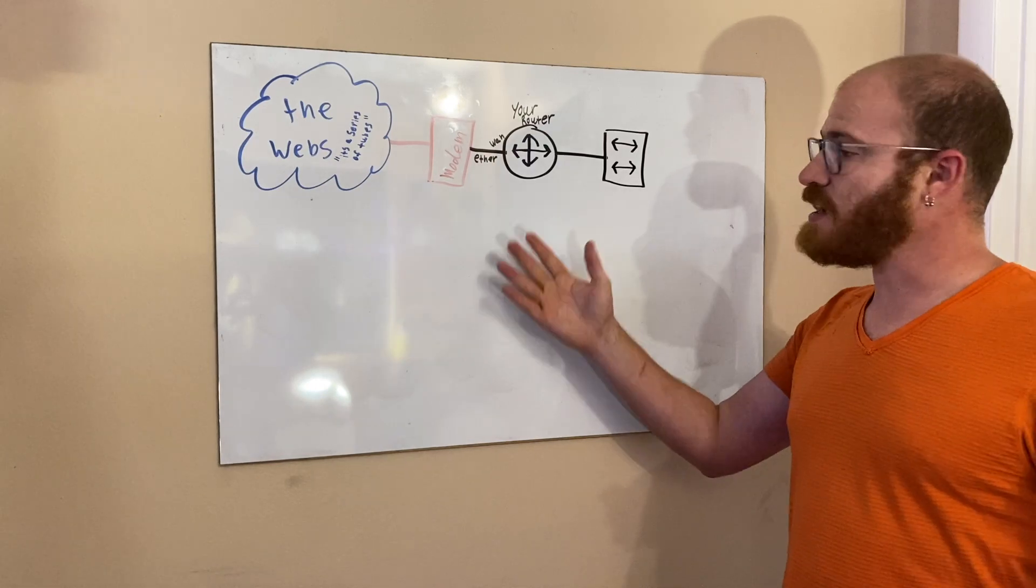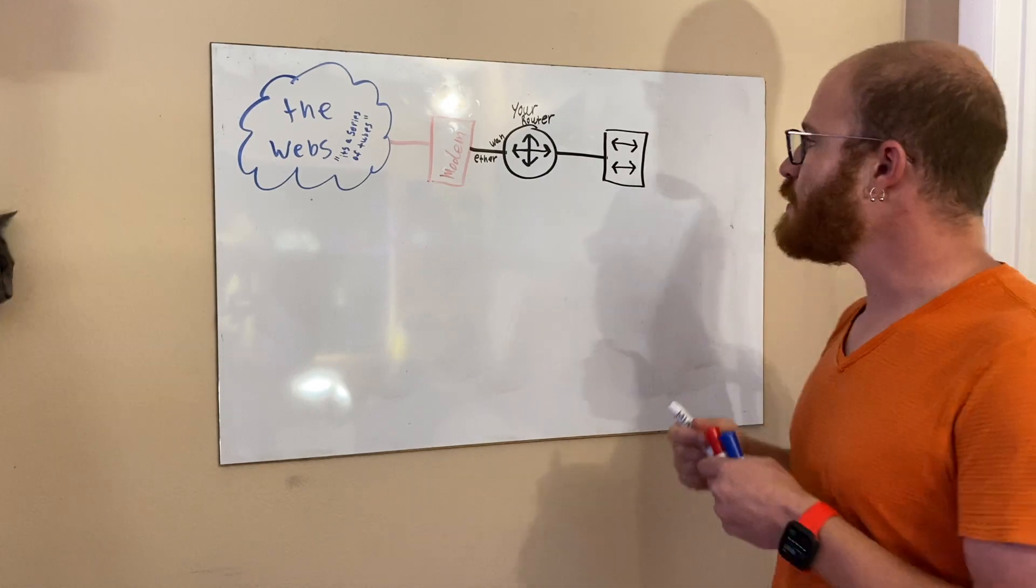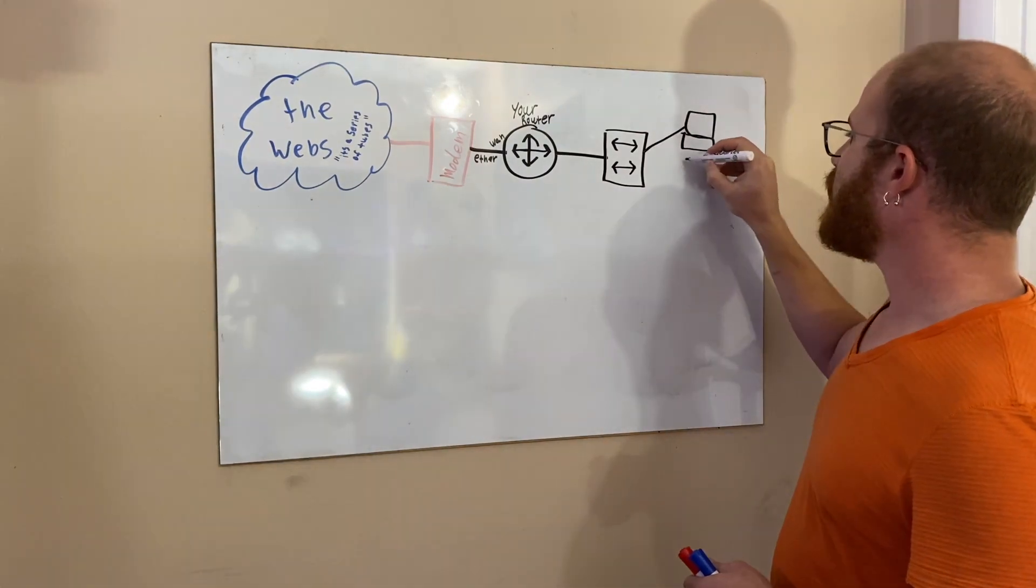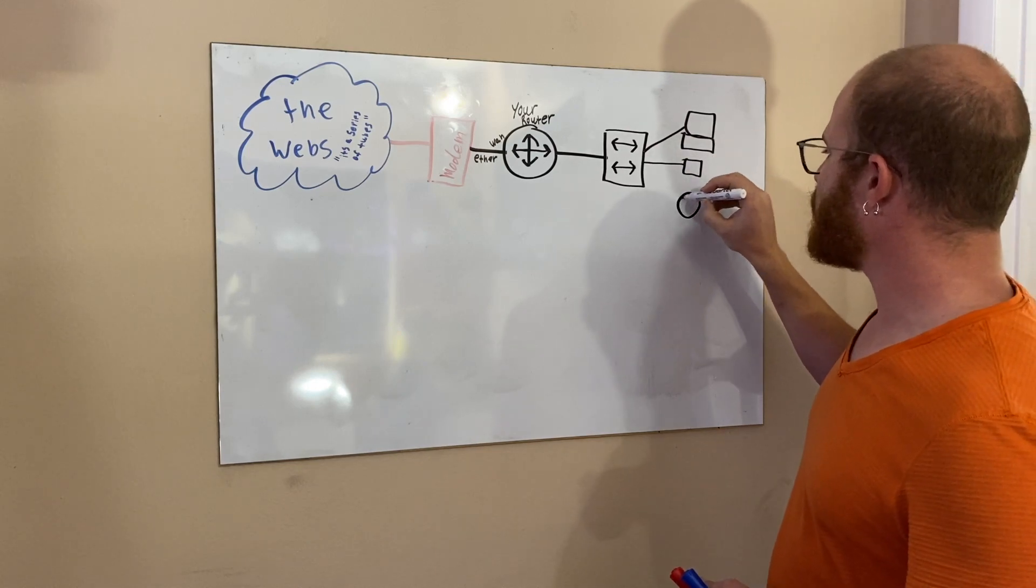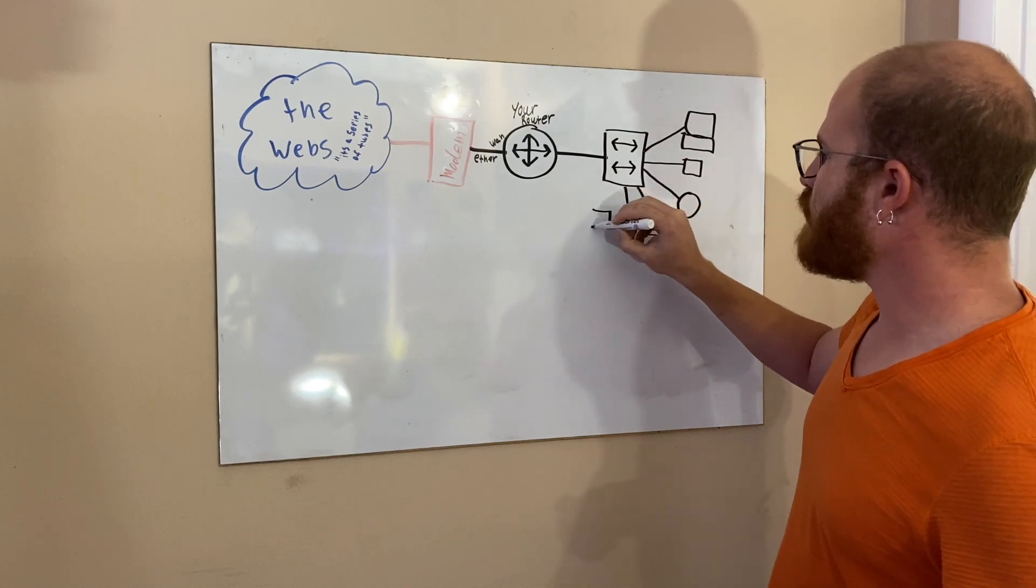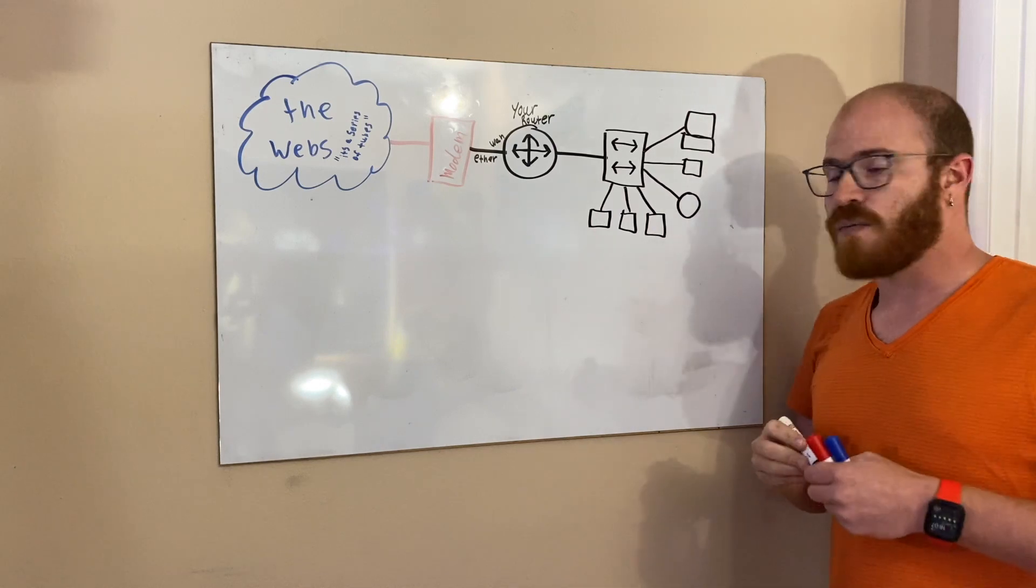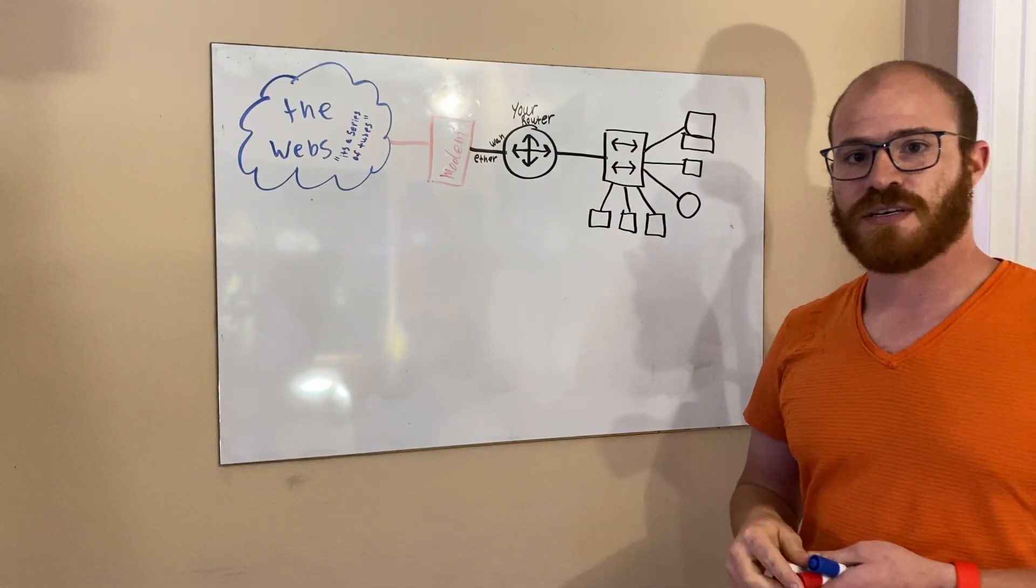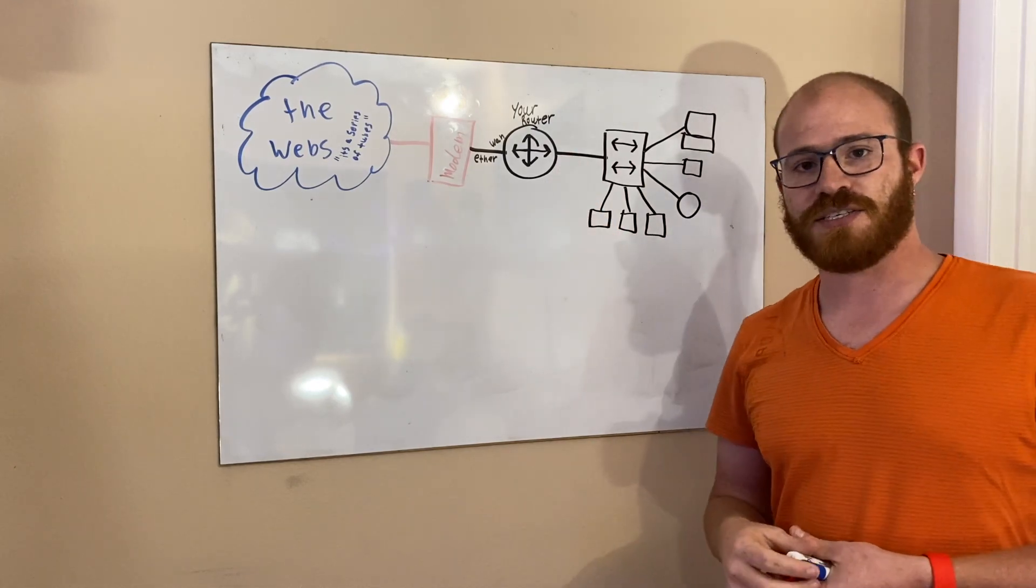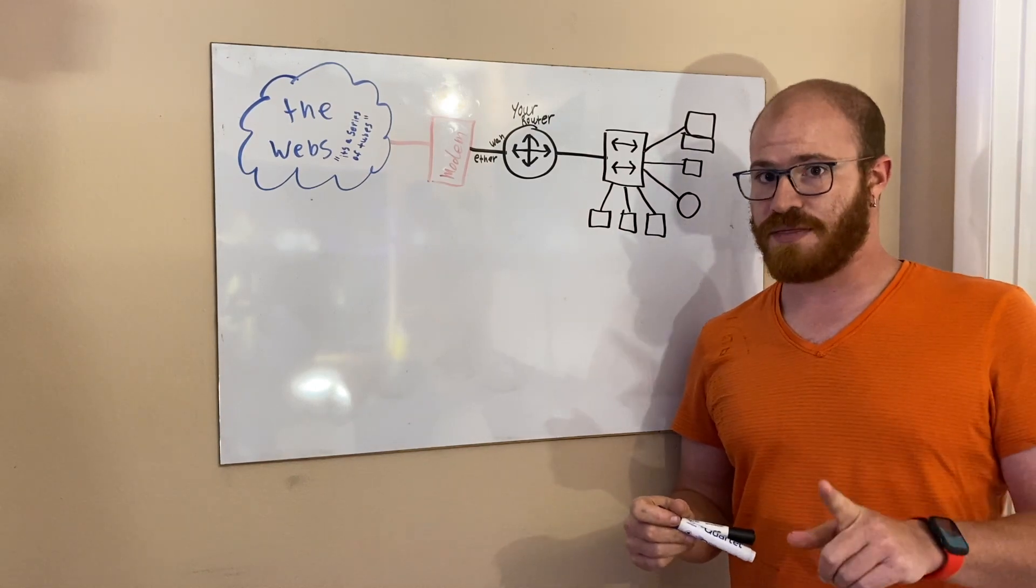So now that we have the basics of a network setup, let's talk about plugging in our devices and device connectivity. From your switch, you'll typically plug in your computer, a Raspberry Pi, your wireless access point, your TV, any game systems, or any other devices that you have that you wish to plug in. When you plug these devices into this ethernet switch, they are going to get an IP address that is the same subnet as your LAN interface. Now again, we're not talking about VLANs yet. We'll get there.